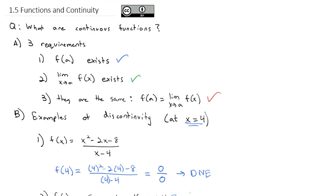Today's lesson is really vocabulary-based — learning what continuous means. Continuous means it satisfies three requirements: does the point exist, does the limit exist, and are they the same? If so, the function is continuous at that point. Go ahead and take a look at the homework to practice, come to class with questions, and we'll look at some applications of continuity and start to get ready for more advanced calculus concepts.